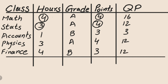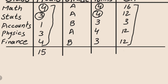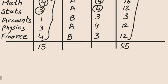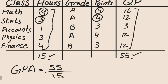We add all the credit hours to get 15, then add all the quality points to get 55. To find the GPA, we divide 55 by 15, and the answer is 3.66. This is our GPA for that particular semester.